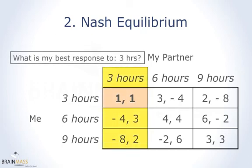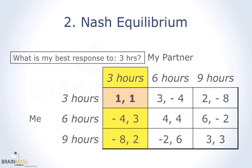We first ask: what is my best response if my partner works for 3 hours? If I work for 3 hours, my payoff is 1. If I work for 6 hours, my payoff is minus 4. If I work for 9 hours, my payoff is minus 8. So obviously, 3 hours is the best response. If my partner chooses 3 hours, I should also choose 3 hours. Remember: in game theory, we only care about our own return from the actions we've chosen — don't worry about the number on the right, only worry about the number on the left.